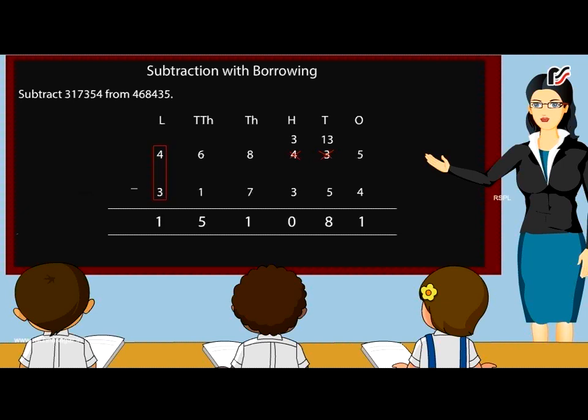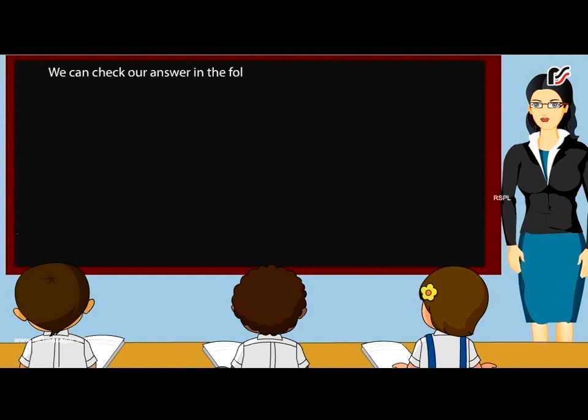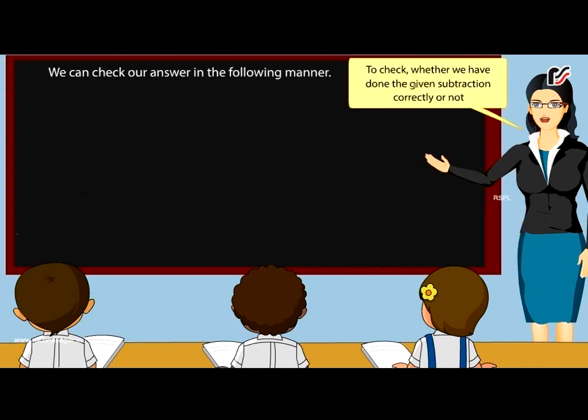1. Write 1 under the hundred thousands column. Thus, the difference between 468,435 and 317,354 is 151,081. We can check our answer in the following manner: